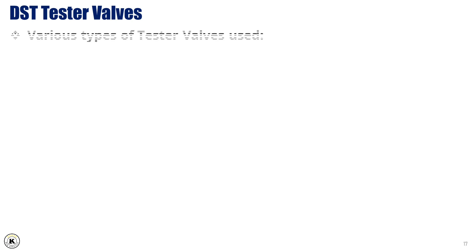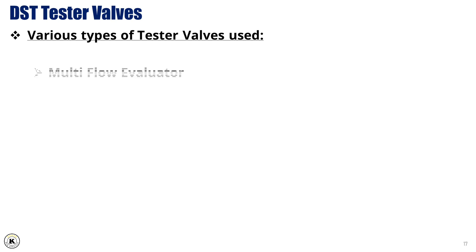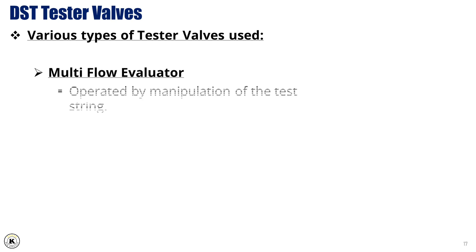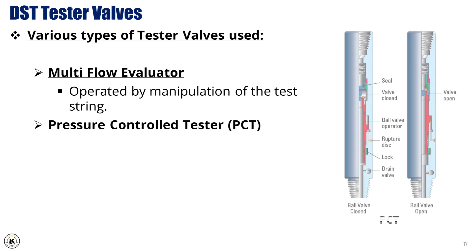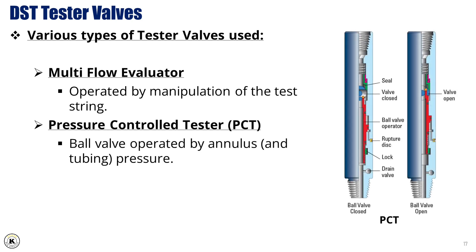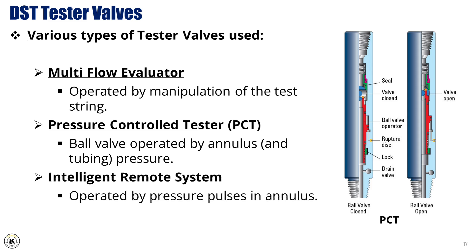DST tester valves: Various types of tester valves are used. The most common are the multi-flow evaluator, operated by manipulation of the test string; the pressure-controlled tester (PCT), a ball valve operated by annulus and tubing pressures; and the intelligent remote system, operated by pressure pulses in the annulus.